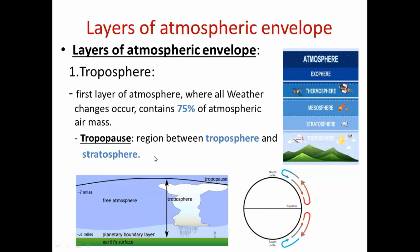The temperature of this layer at its top is minus 60 degrees Celsius, and the normal atmospheric pressure value is 0.1 bar. Air movement in this layer is vertical.